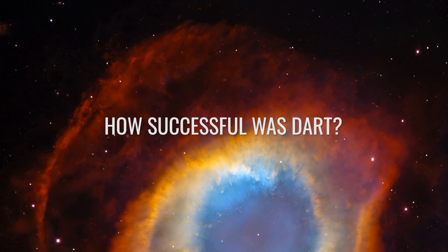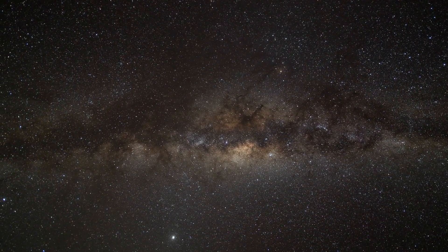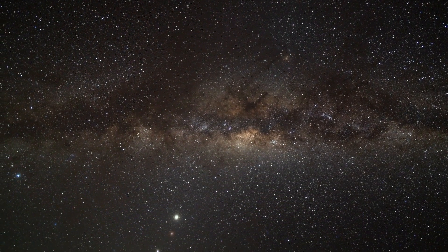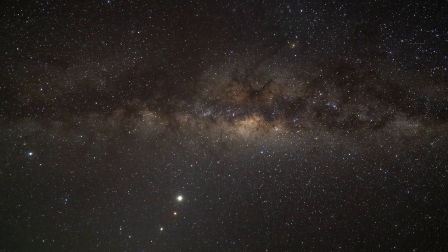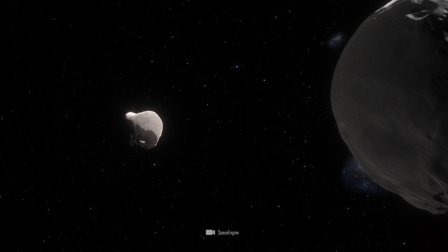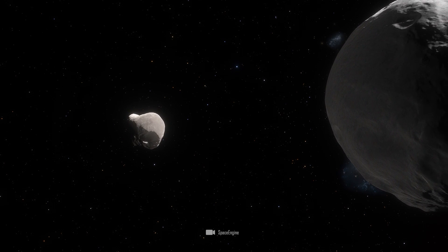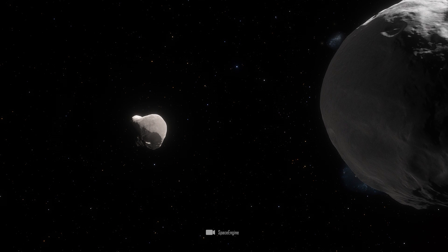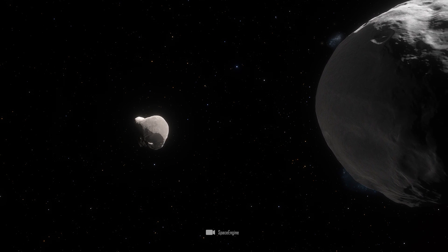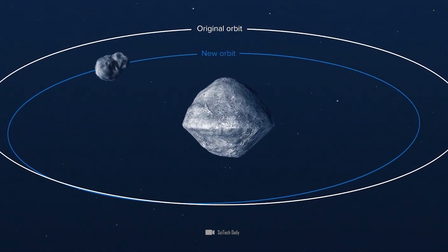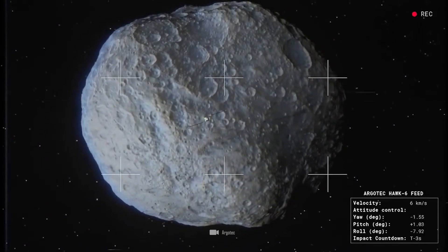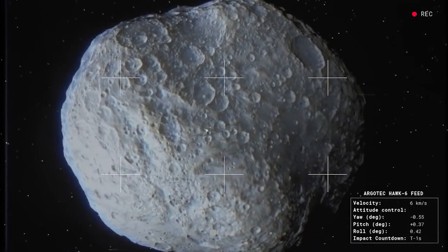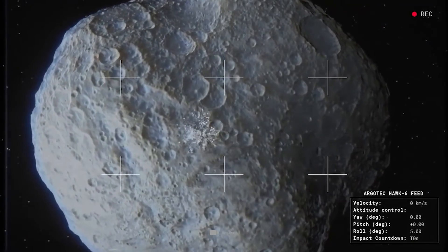How successful was DART? With trepidation, the world awaited the first evaluations of the success of the orbit shift. NASA wanted to shorten Dimorphos' orbital period of 11.921473 hours by about 10 minutes. In fact, the impact shortened the orbital period by 33 minutes, plus or minus 20 seconds. At first, this sounds great. After all, the impact was obviously even more successful than assumed.